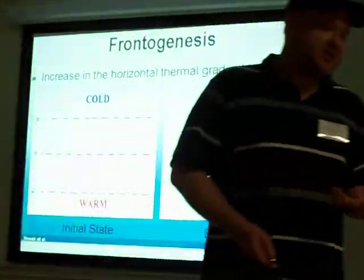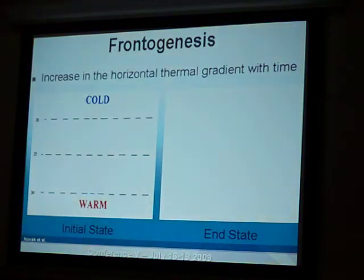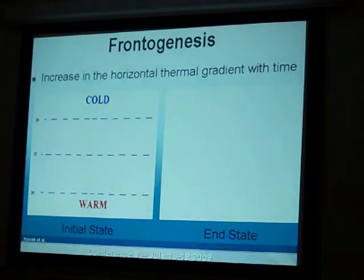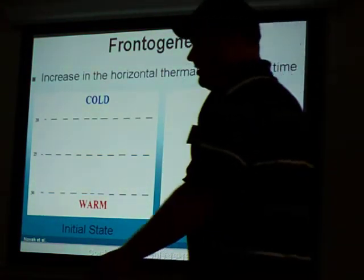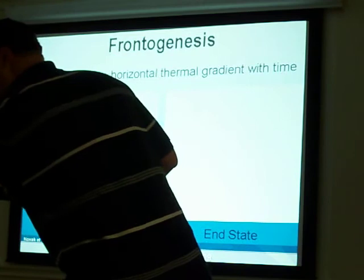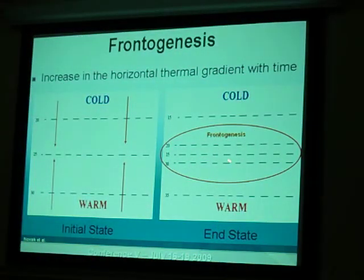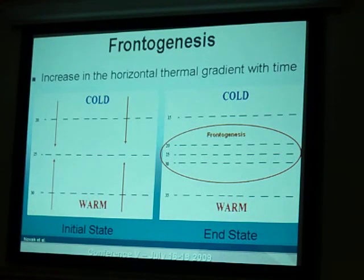We talk about frontogenesis and deformation bands, so we want to get into that and get the terminology down. It's pretty simple — frontogenesis means you're forming a front. It doesn't have to be at the surface; most of the time in these cases it's in the mid-levels of the atmosphere. Basically your initial state: you have cold air to the north and warm air to the south. What happens is you converge the two air masses, and your isotherms are going to become more tightly packed. That's basically how a front forms. And this has a lot to do with the banding — we'll show why.